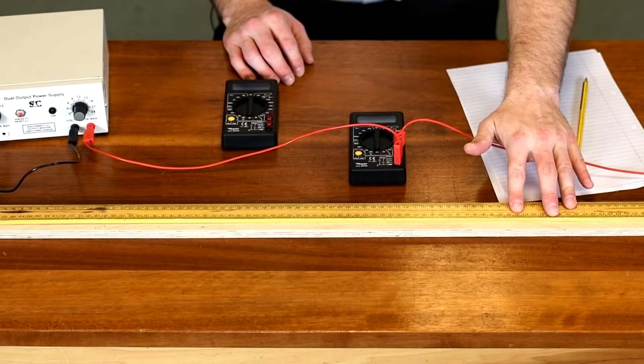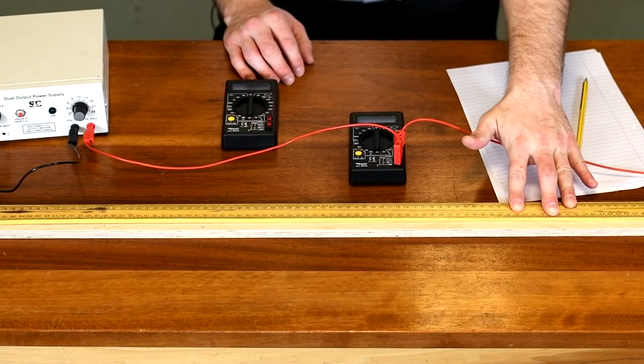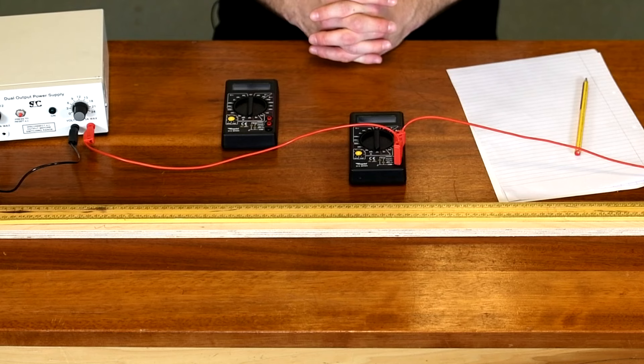The wire that I'm going to be working with today is Constantin, and I have my wire here that's been connected to a meter rule. Now I'm going to be seeing how the resistance of the wire changes with length, but you can carry out the investigation to see how resistance changes with thickness or cross-sectional area as well. It's a bit more difficult because you have to change out the wire and you have to have various thicknesses or various gauges of wire.